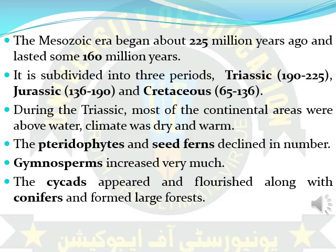In the Triassic time period, the weather was warm and dry, and many continents of the earth were above the water. It was noted that tree ferns and seed ferns were going to be declined in that time period. It was also noticed that gymnosperms, cycads, and conifers were increasing in number.